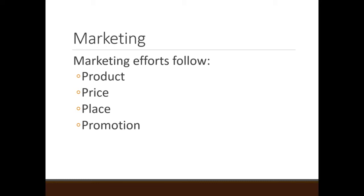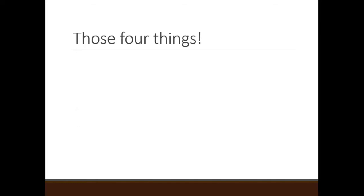Marketing efforts follow four things: product, price, place, and promotion — the four P's. Product, price, place, promotion. I'll think of a fifth P to put in the test and say, which of these is not one of the four P's of marketing? Product, price, place, promotion — those are your four P's.